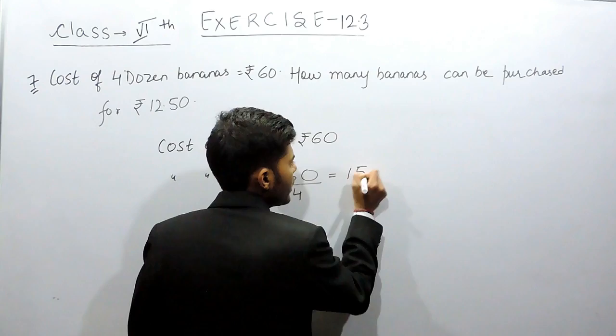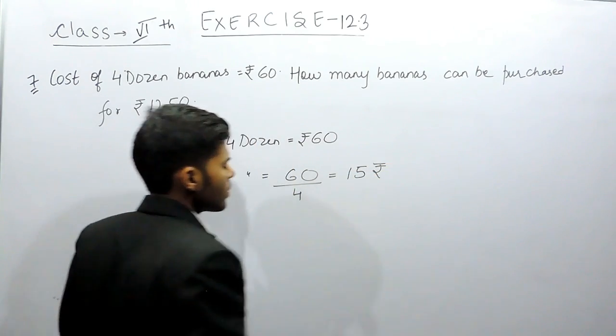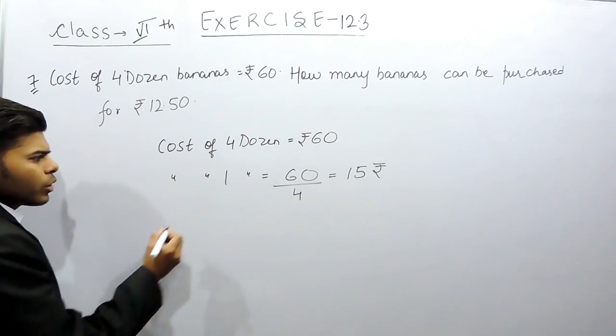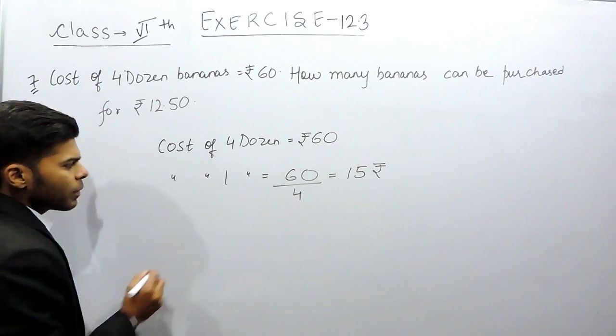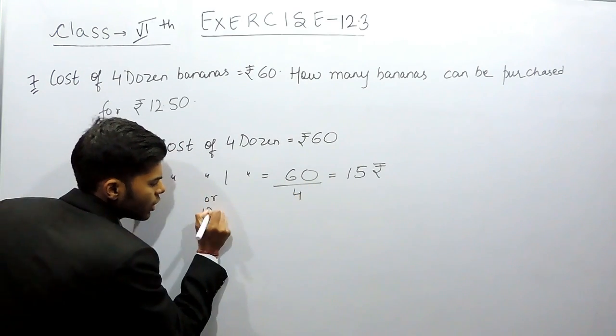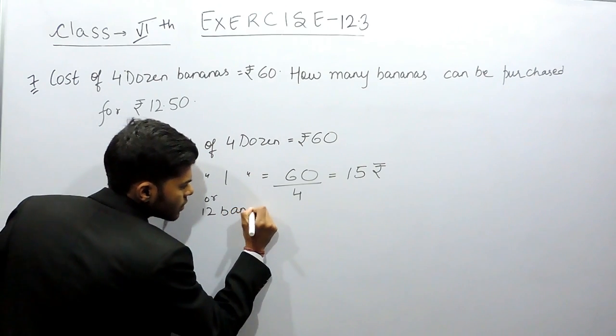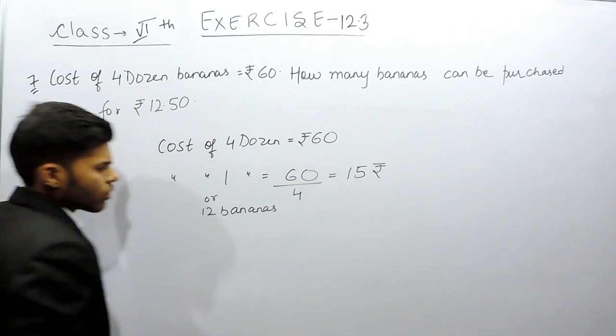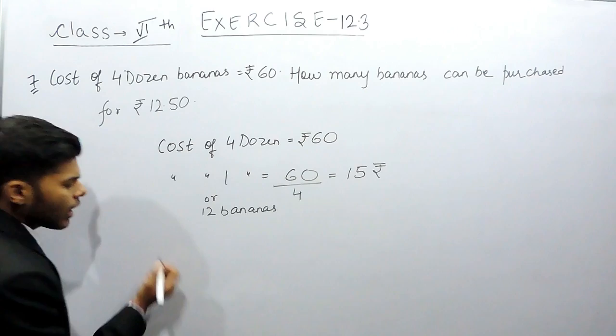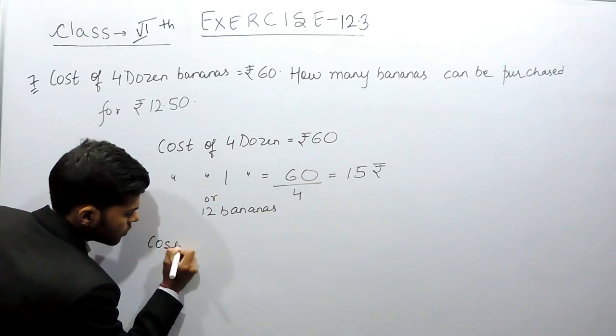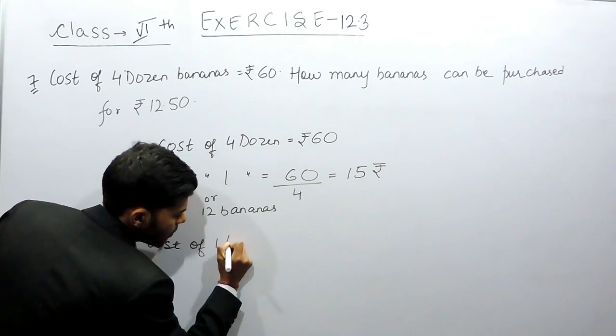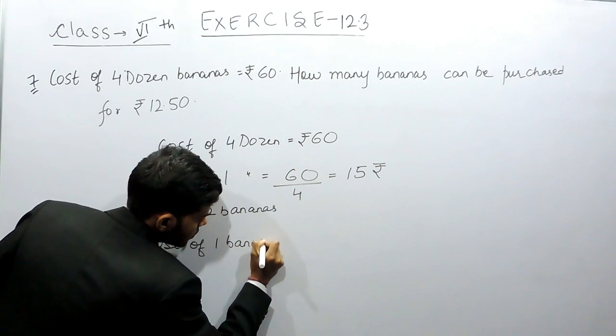And that will be equals to 15 rupees. This means that 12 bananas can be purchased for 15 rupees. Now we'll find the cost of one banana.